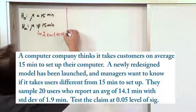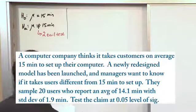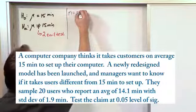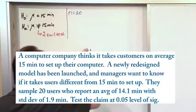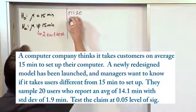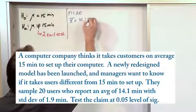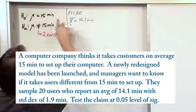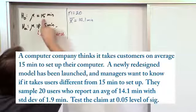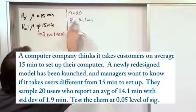The next thing we do is look at the data. They sample 20 users, so n equals 20. They report an average of 14.1 minutes. That certainly looks different than 15 minutes, but it's not dramatically different — it's only 0.9 minutes different. And the standard deviation is 1.9 minutes.